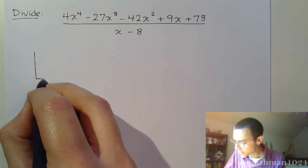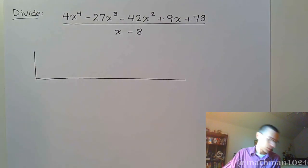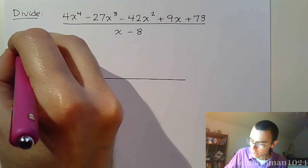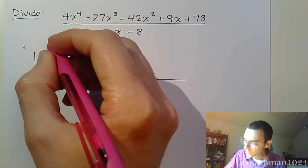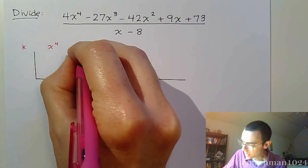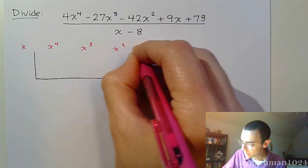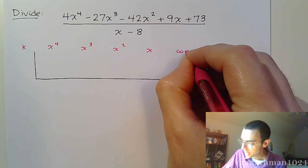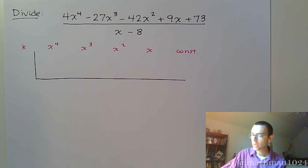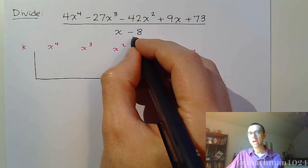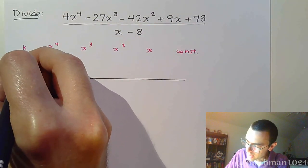First start off with your little L-shaped bar and then put your headings. Your K is always going to go out here. Identify the highest degree which is 4 and start labeling that for your columns. So x to the fourth, remember you don't skip anything so it goes 3, 2, 1, and at the end you're going to have your constant term. Remember no skipping. Your K value is, we see a minus 8, but remember we're going to do the opposite of what we see, so that's actually going to be a positive 8.